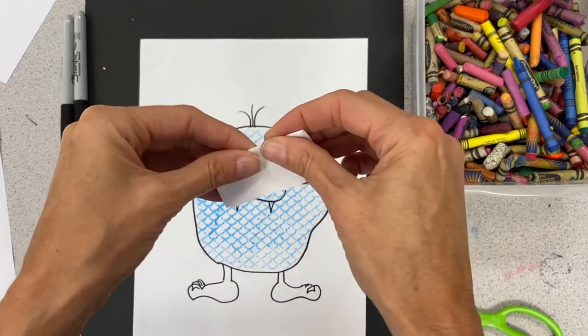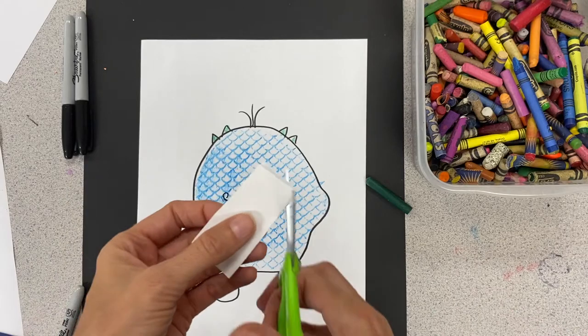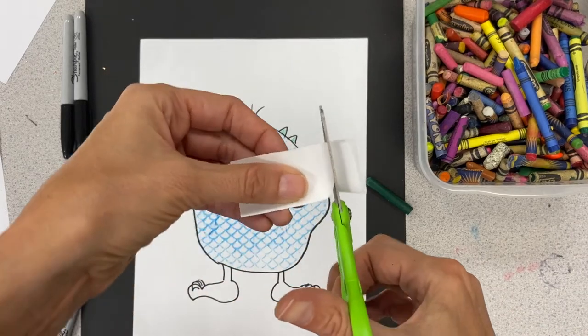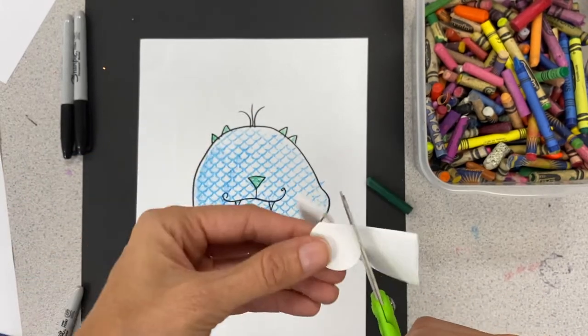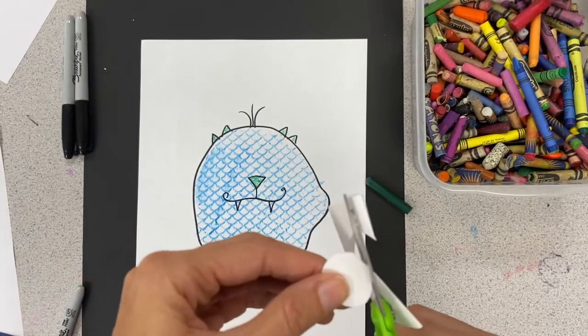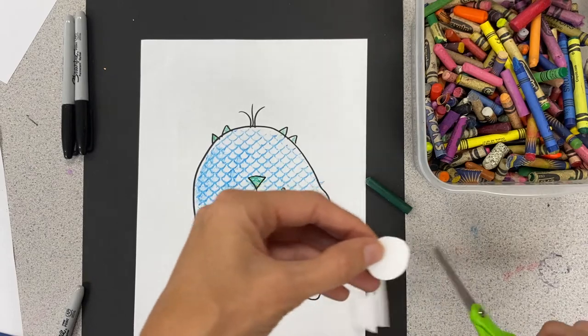And fold it in half just so I can have two circles that look the same. I'm going to go ahead and cut out two circles, so I'm actually cutting one, but since my paper is folded in half I'm going to get two.